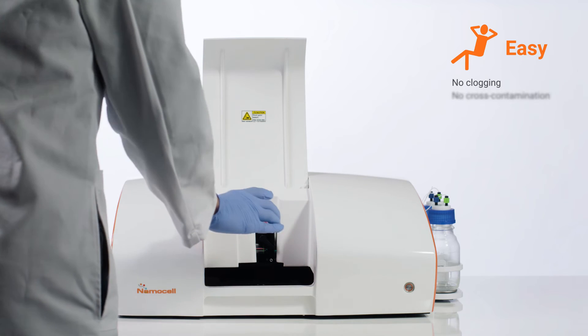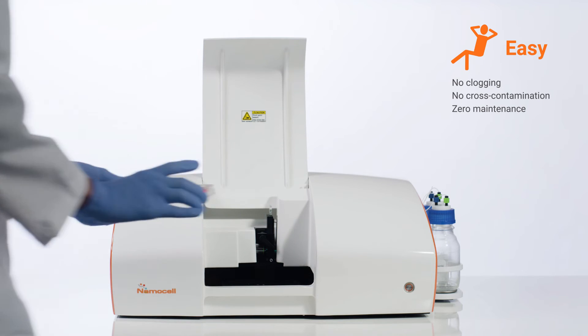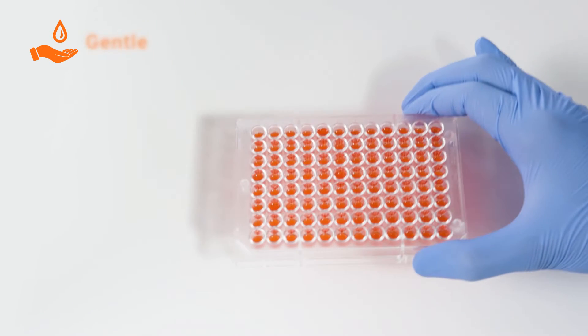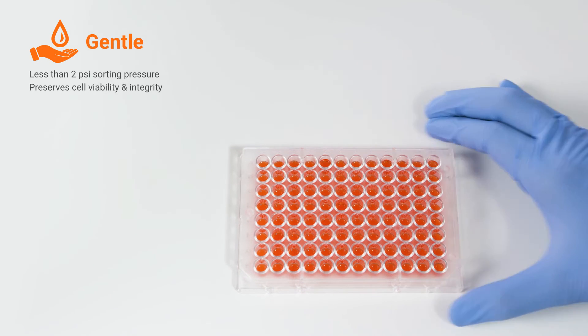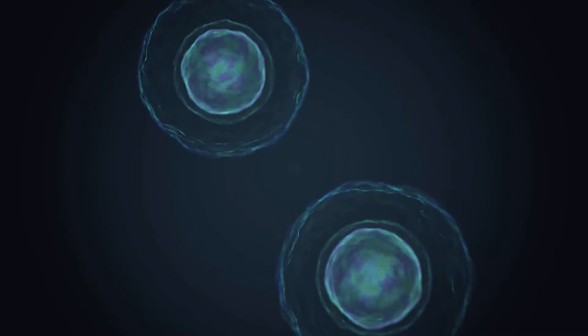With no clogging, no cross-contamination, zero maintenance, and effortless sterile sorting, the Pala is an easy and worry-free instrument designed for every lab. With a low sorting pressure less than 2 PSI, the Pala will preserve the viability and integrity of your cells.